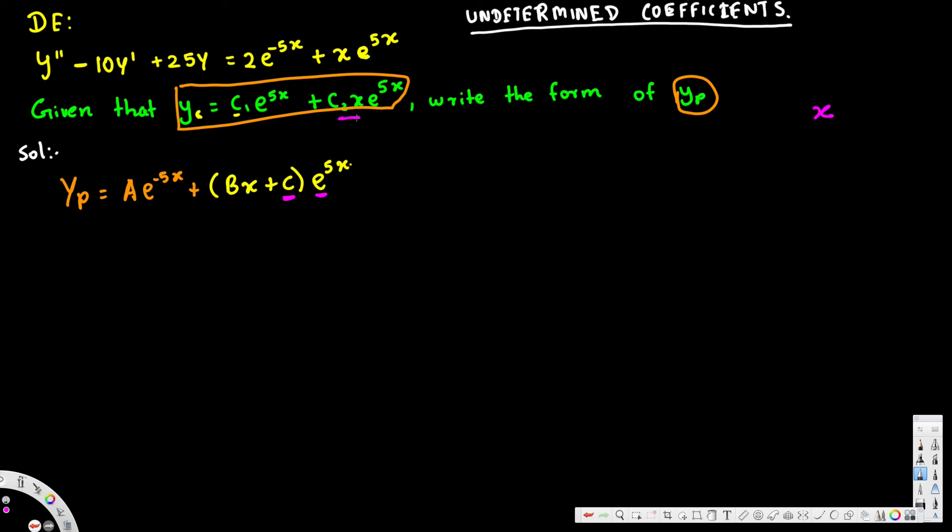c2*x is a constant times x multiplied by e^(5x). Here we have constant times x multiplied by e^(5x) again, so we have another x. We have to multiply by another x, so totally we multiply by x^2.